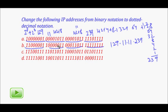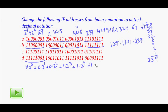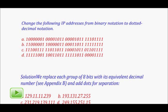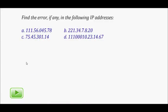Similarly, you can find the other answers. To convert to binary, note that each bit position represents a power of 2: 2 to the power of 0, 2 to the power of 1, up to 2 to the power of 7. So for example, 10001111 means 1 times 2^0 plus 1 times 2^3 plus 1 times 2^4 plus 1 times 2^5 plus 1 times 2^6 plus 1 times 2^7. The answer 129.11.11.239 is confirmed correct.